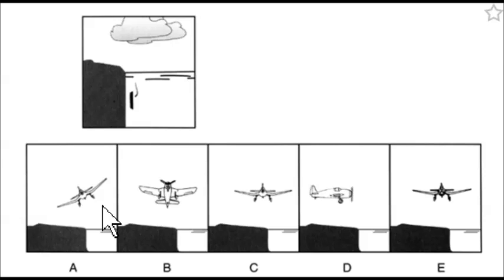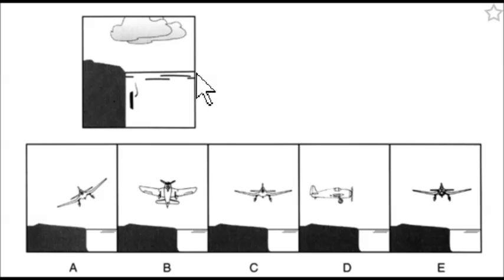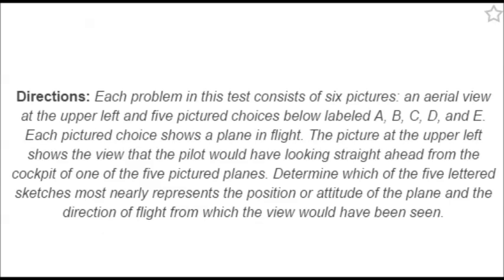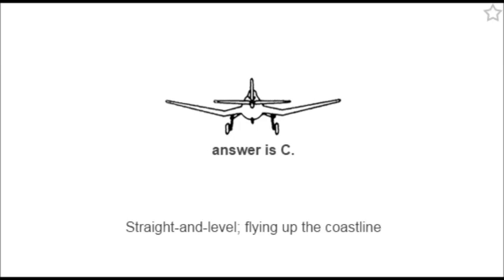So we could throw this one away — all the other guys are level. The horizon is split in the square, so this is level flight. The land is to the left and the water is to the right. So it looks like C to me. And that is right.